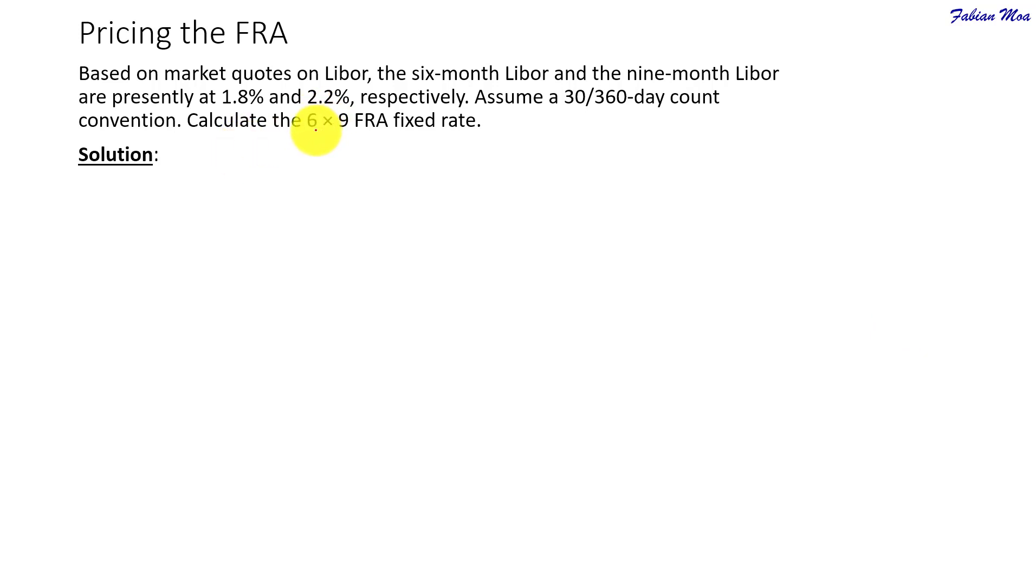Now, by 6 by 9, it's a convention for forward rate agreements which means that the FRA will expire in 6 months time. This is when the FRA will expire and then the underlying maturity is 3 months LIBOR which will start from month 6 and it will mature in 9 months time.